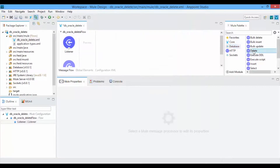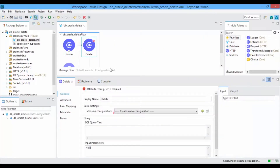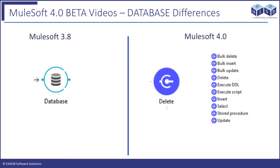Now drag and drop the Database Delete Connector and give an appropriate display name for it. Earlier Mule versions had only one database connector which could be used for multiple operations based on its position. But in the new Mule 4 version, the database module has multiple connectors based on the operation, like Select, Create Insert, Update, Delete, Bulk Select, Bulk Insert, Bulk Update, etc.